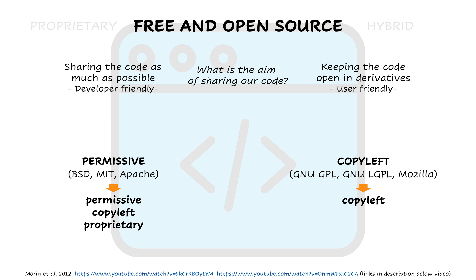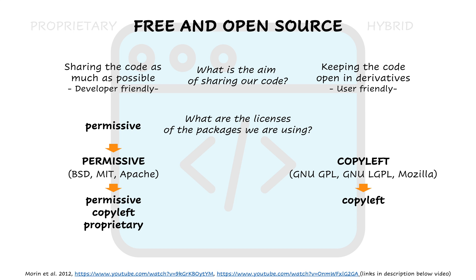The second question is: what are the licenses of the packages we are using? If we want to use a permissive license, we must ensure the packages or libraries we are using also have permissive licenses. If one of them has a copyleft license, we cannot use that package because we cannot guarantee future openness. On the other side, if we want to use a copyleft license, we can use existing code with either a permissive or copyleft license, because our copyleft license will propagate openness to future versions.